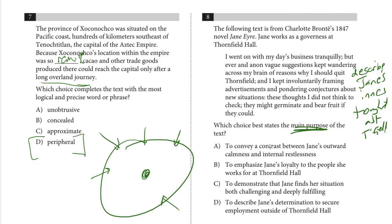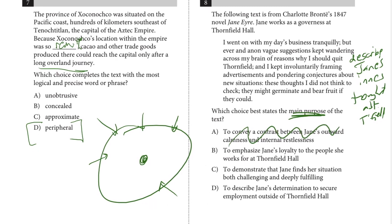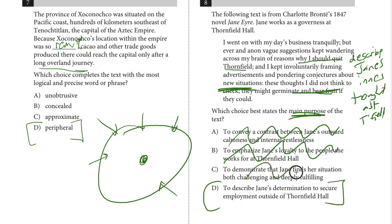Looking at the answer choices: we have no indication of Jane's outward appearance, so we can't have a contrast there. We don't see anything about her loyalty. Her thoughts suggest she wants to find employment outside Thornfield Hall — new situations, conjectures as speculations. She seems to find Thornfield challenging or at least unfulfilling, so the answer is D.